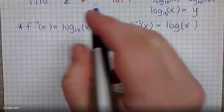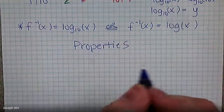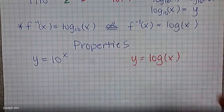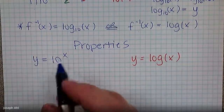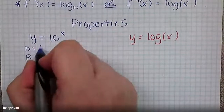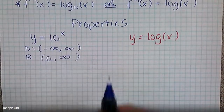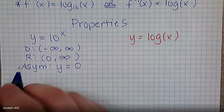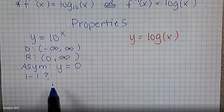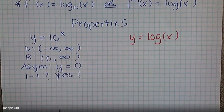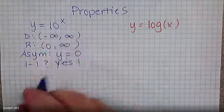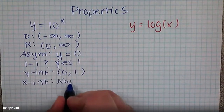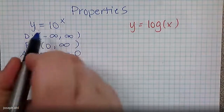Let's compare and contrast properties of Y equals 10 to the X versus Y equals log of X. For 10 to the X: the domain is all real numbers — you can plug in whatever you want — but the range is zero to infinity because of the horizontal asymptote. Speaking of which, the horizontal asymptote is at Y equals zero. This exponential function is one-to-one, passing both the vertical and horizontal line tests. It has a Y-intercept at zero comma one, and there is no X-intercept due to the horizontal asymptote at Y equals zero.